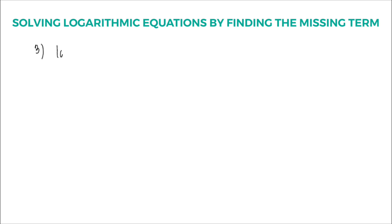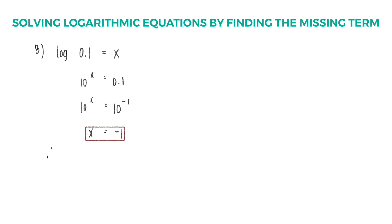Example number 3: logarithm of 0.1 is equal to x. The equivalent exponential form is 10 raised to x is equal to 0.1 — remember, if there is no subscript, the base is 10. The missing value is the exponent. Convert 0.1 to scientific notation: it will be 10 raised to negative 1. Since the bases are now the same, apply the property of equality — the value of x is equal to negative 1.